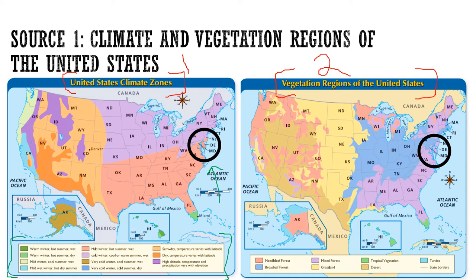Looking at the map key, Maryland has a mild winter, hot summer, and is wet in one part, while another part has cold winters, cool or warm summers, and is also wet. I'm wondering why Maryland has two different climate zones — I thought we were just one state. On the second vegetation map, Maryland also has two different vegetation regions: mixed forest and broadleaf forest. When I look closely at both maps, the climate zones and vegetation zones look really similar — I'm wondering if there are connections between climate and vegetation.